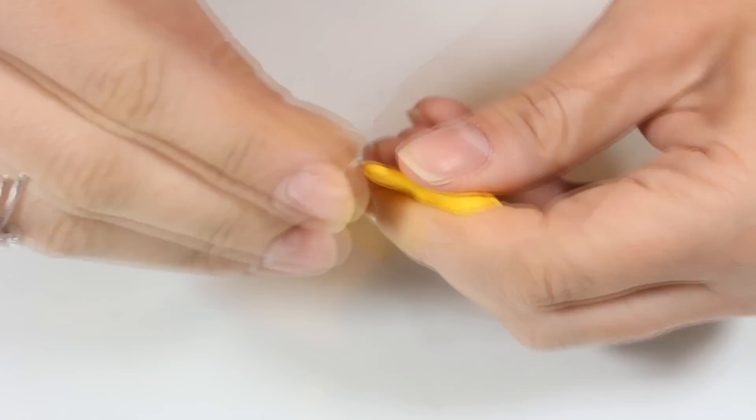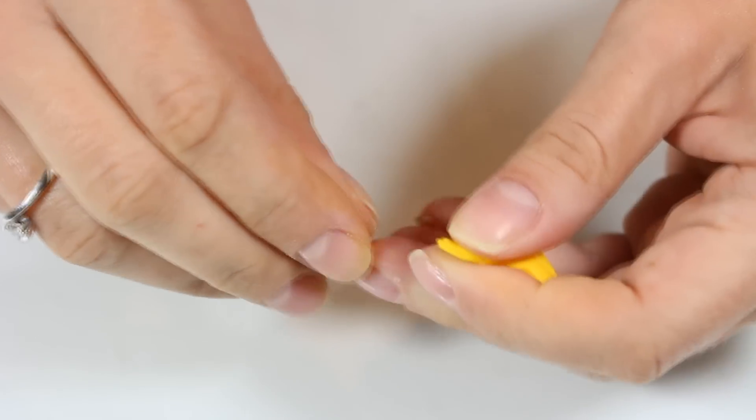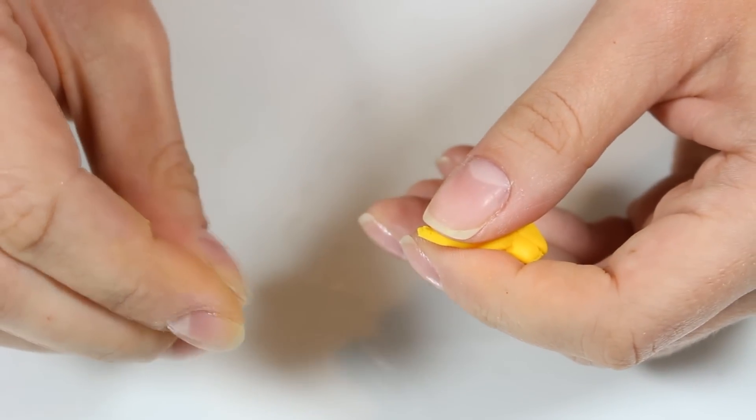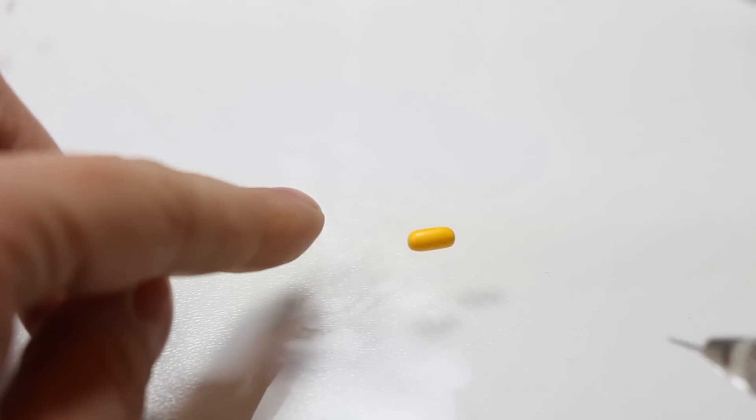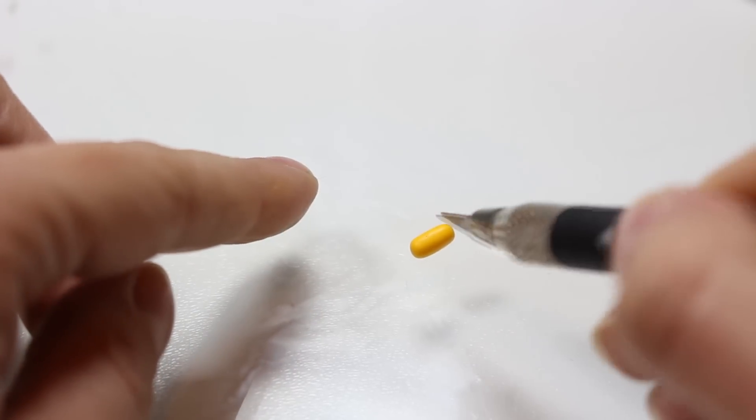Moving on I'm going to take a piece of yellow clay that I'm going to use to make corn kernels. All you want to do here is to make lots and lots of tiny balls or beans and cut them in halves with an exacto knife or razor.